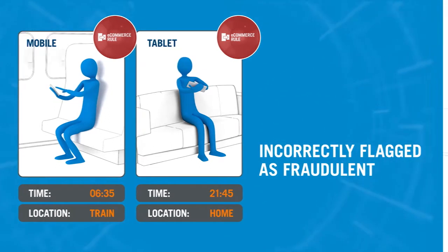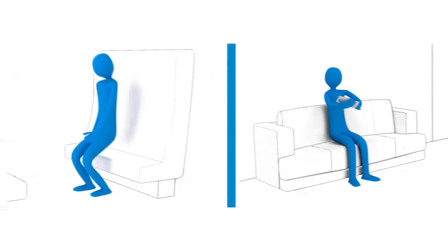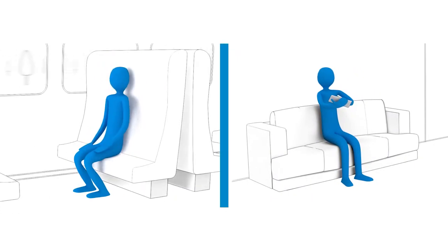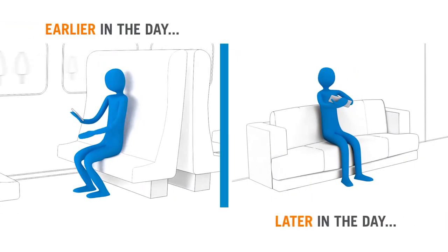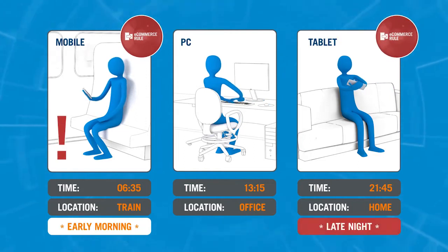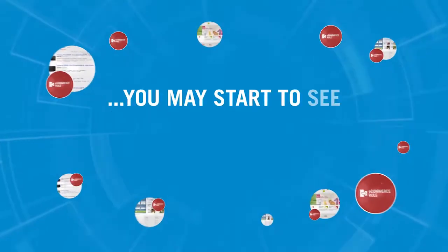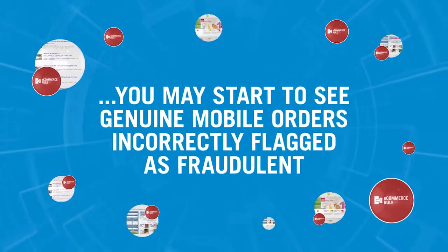This example isn't unique. While most online shopping does take place on a PC during the daytime when people are at work, the convenience of mobile devices means that orders are often placed earlier or later in the day when consumers are away from their laptops or PCs. If your fraud detection rules regard late night or early morning orders as risky, then you may start to see genuine mobile orders incorrectly flagged as fraudulent. Great insight there — thanks very much indeed for joining me today. Thank you for having me.